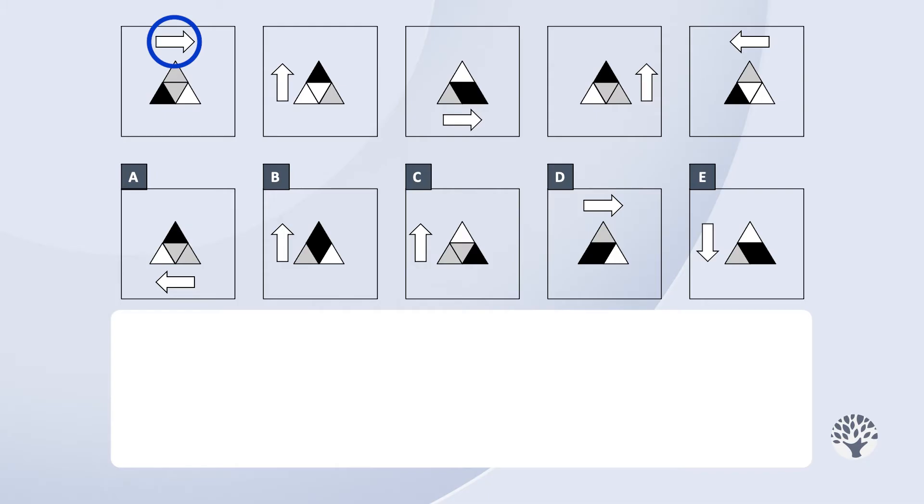In the second frame, the arrow is pointing up and located to the left of the triangles. In the third frame, the arrow is pointing to the right and positioned below the triangles.